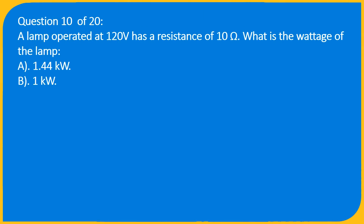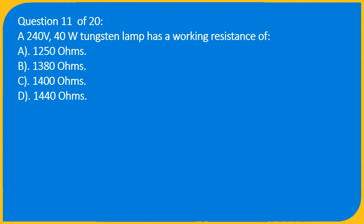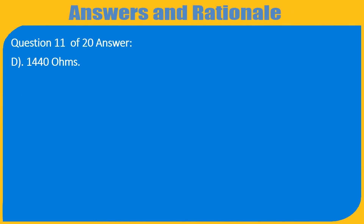Question 10 of 20: A lamp has a resistance of 1250 ohms. What is the wattage of the lamp? A. 1.44 kilowatts, B. 1 kilowatt. Answer: A. 1.44 kilowatts. Question 11 of 20 Answer: D. 1,440 ohms.